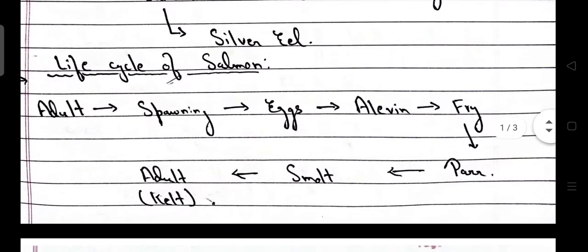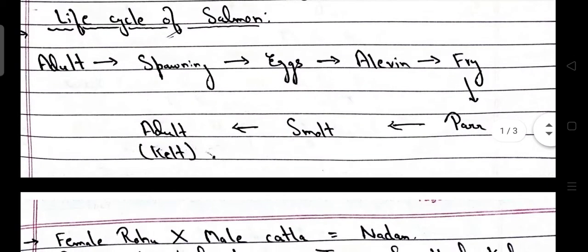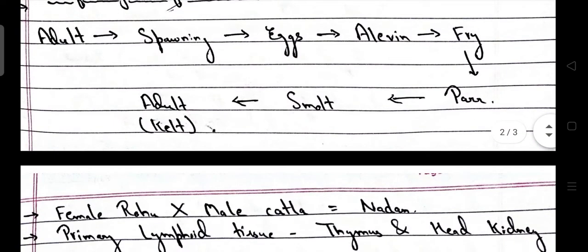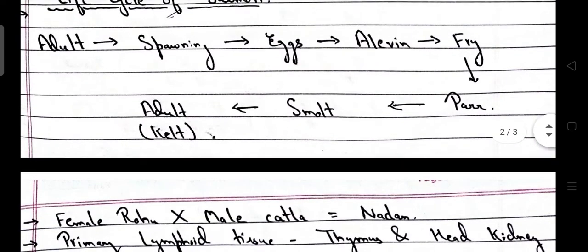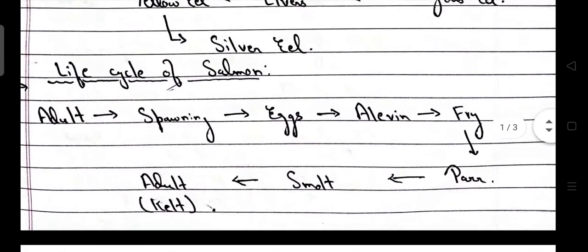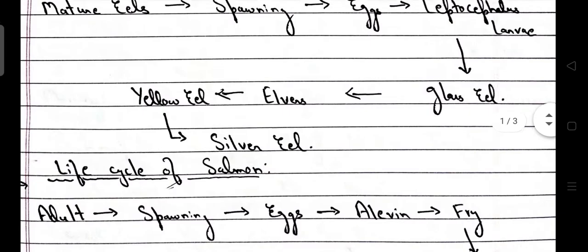The life cycle of salmon: adult, then spawning, eggs, then alevin, then fry, then parr stage, then smolt, then adult — also known as the kelt stage. This completes the life cycle of salmon and the life cycle of eel.